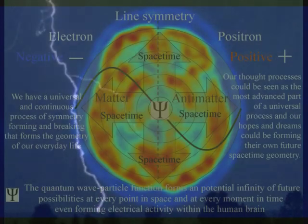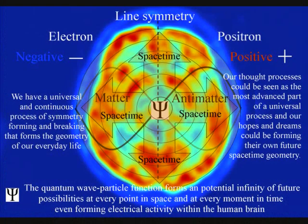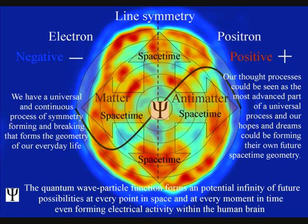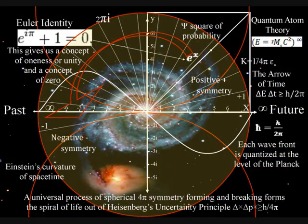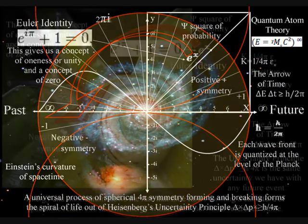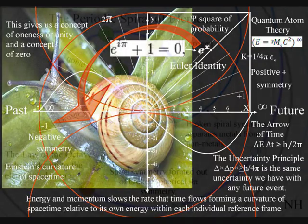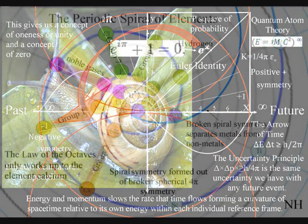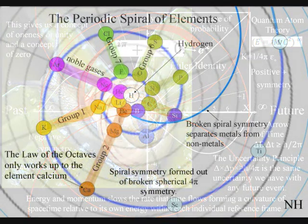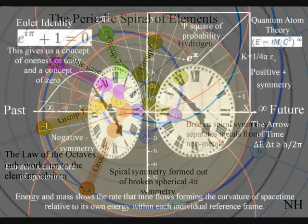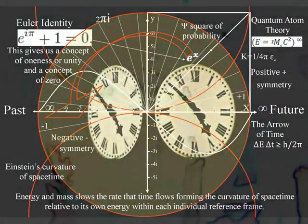The most advanced part of this universal process is in the form of electrical activity in the brain, being able to comprehend and measure this process as the flow of time with a past and uncertain future. This process is totally universal and interactive, from the largest object to the smallest creature, right down to the smallest element of the periodic table, with each slowing the rate that time flows, forming a curvature of space-time relative to its own energy or mass.